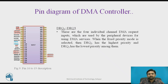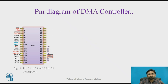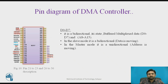About DRQ0 to DRQ3 — these are the four individual channel DMA request inputs which are used by the peripheral devices to request DMA services. When the fixed priority mode is selected, DRQ0 has the highest priority and DRQ3 has the lowest priority. About the data lines D0 to D7 — it is a bidirectional, tri-state, buffered, multiplexed data and address bus. In the slave mode, it is bidirectional, behaving like a data bus. In the master mode, it is unidirectional, behaving like an address bus.